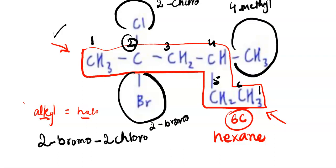4-methylhexane. So this is the name of the compound, 2-bromo, 2-chloro, 4-methylhexane.